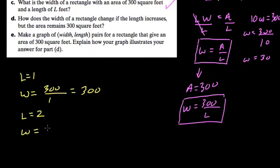Well, because W equals 300 now divided by the length, and this time the length is 2. So instead of 300 divided by 1, we have 300 divided by 2, and that's 150.